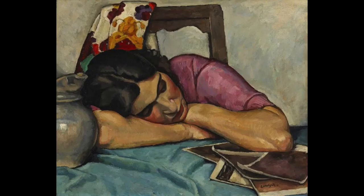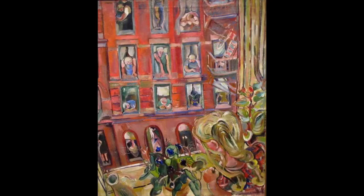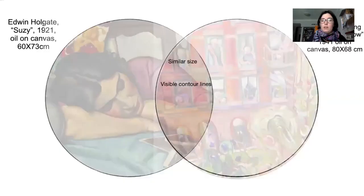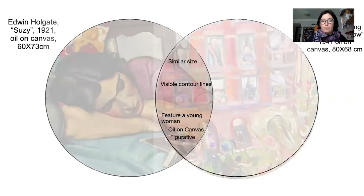They both have very visible contour lines — both artists use very strong lines across the edges of almost every figure within the piece. They both feature a young woman, though of different ages, and both artists used oil on canvas to create their artwork. Both pieces are figurative — they include people, so they're figurative.